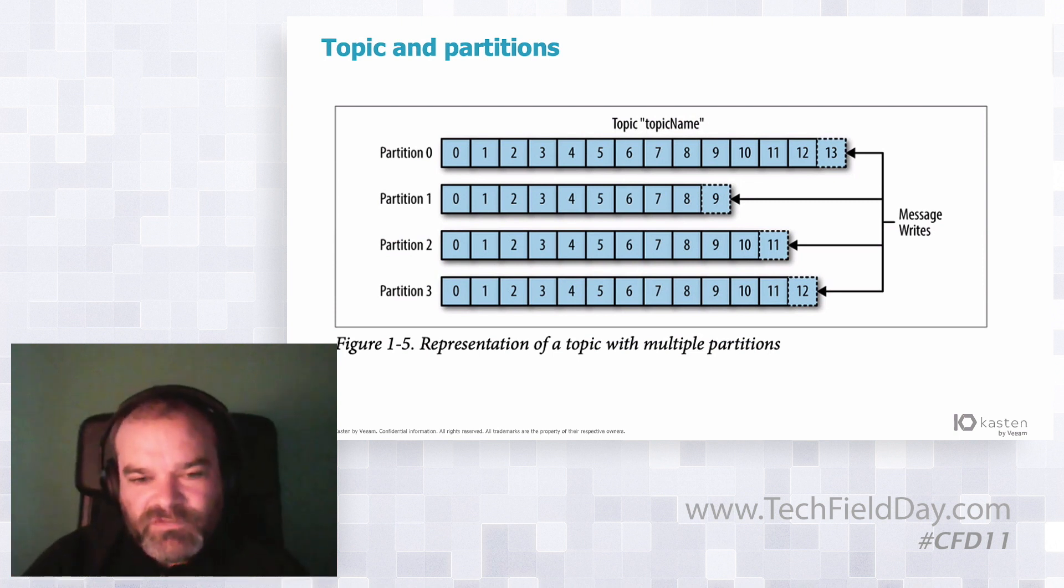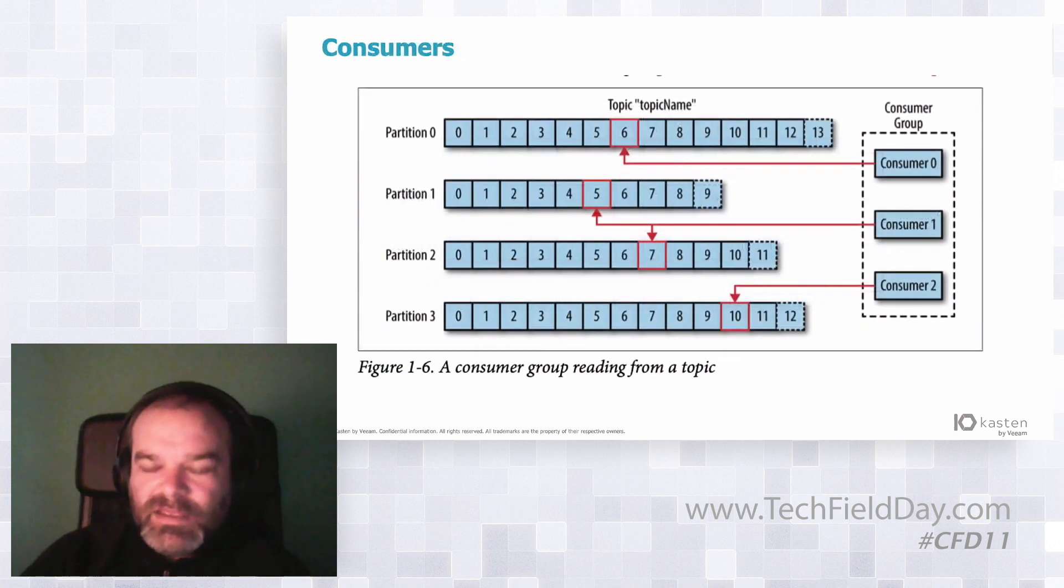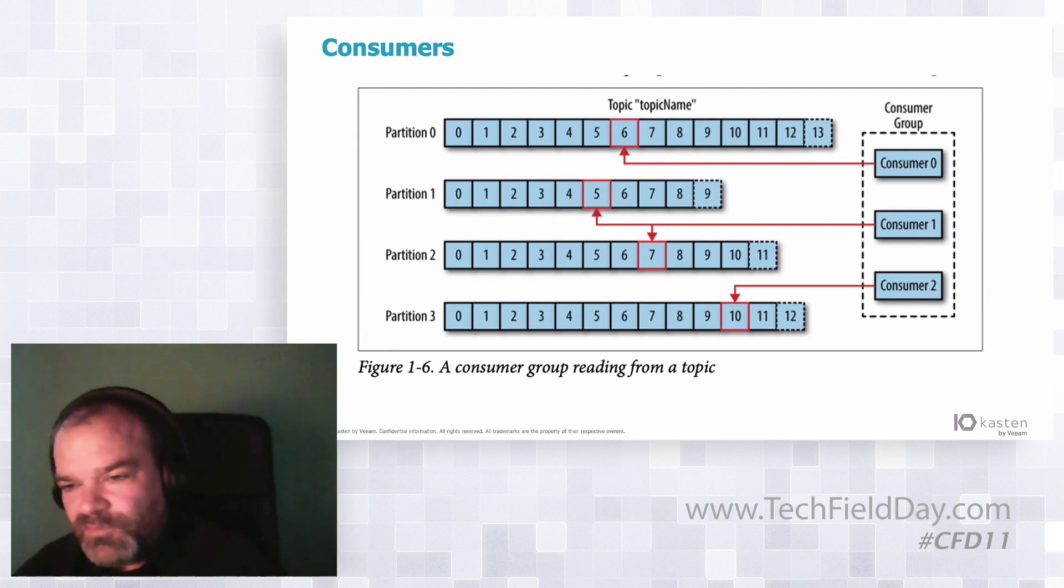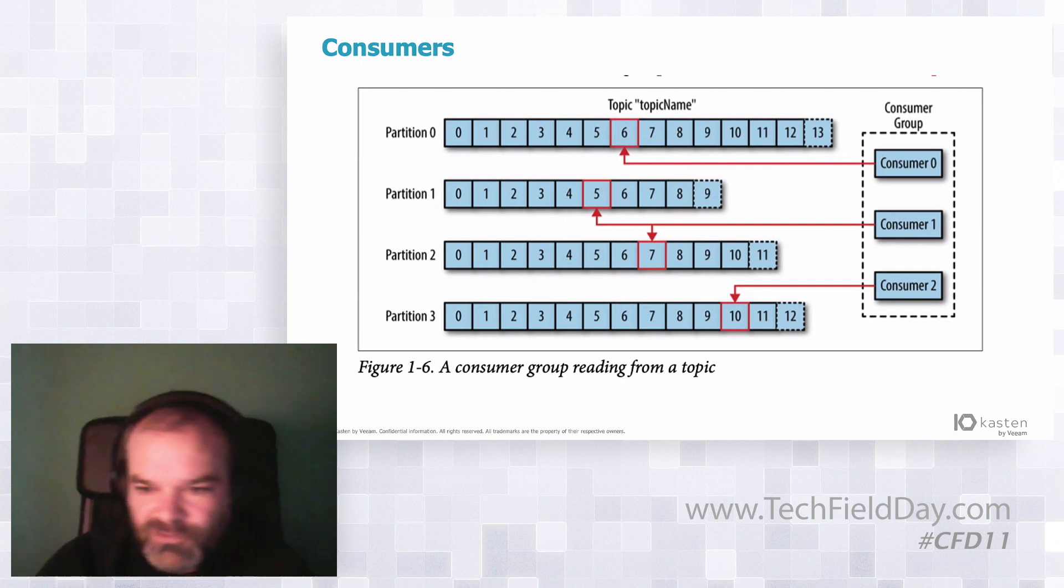The order is always guaranteed inside the partition. And the consumers are the ones that read from the topic. So the consumers are given inside the group a topic to be read. So in this case, for example, the consumer zero is reading the partition zero, but because we have three consumers for four partitions, one of the consumers has to handle two partitions.